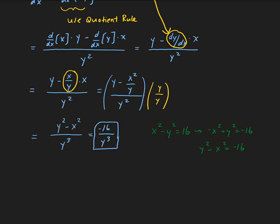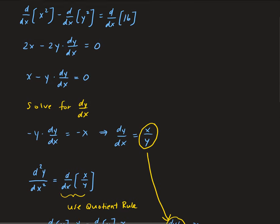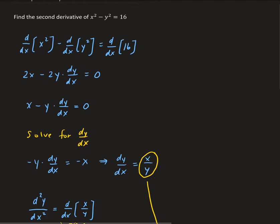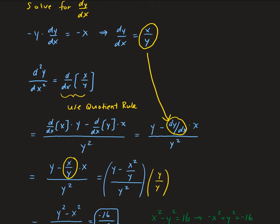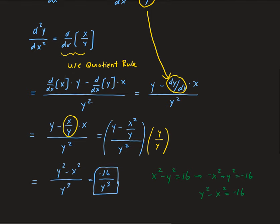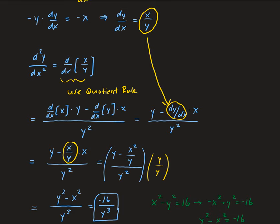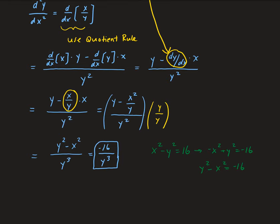So the second order derivative simplifies to negative 16 over y cubed. To summarize: we took the derivative of each term using implicit differentiation, solved for dy/dx, used the quotient rule to find the second order derivative, substituted the first derivative back in, simplified the compound fraction, and then used the original equation to replace the numerator with negative 16.